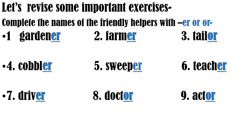Let's repeat. Gardener — gardeners work in the garden. Farmer — farmers work on farms. The third one is tailor, the fourth one is cobbler, the fifth one is sweeper, the sixth one is teacher, the seventh one is driver, the eighth one is doctor, the ninth one is actor — actors act in films and serials. The tenth one is conductor — a conductor gives us tickets when we board a bus.